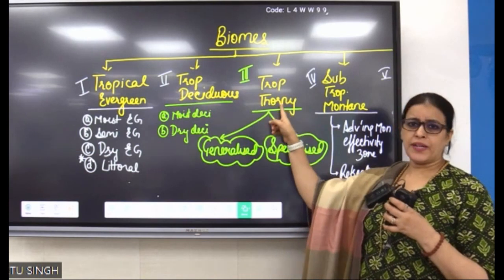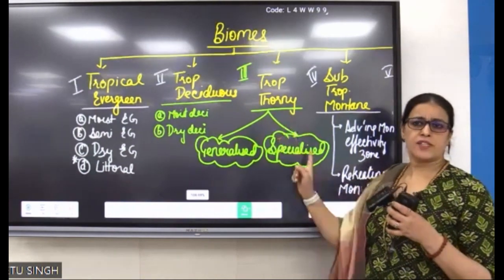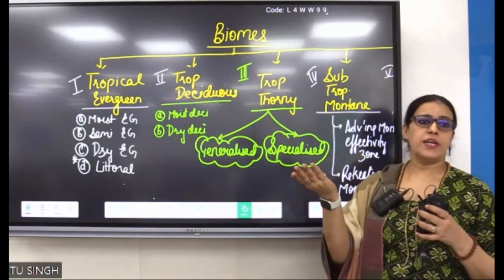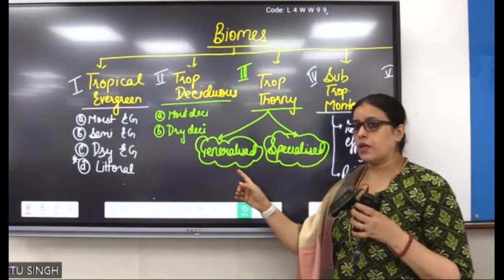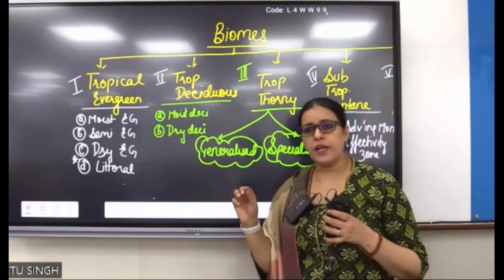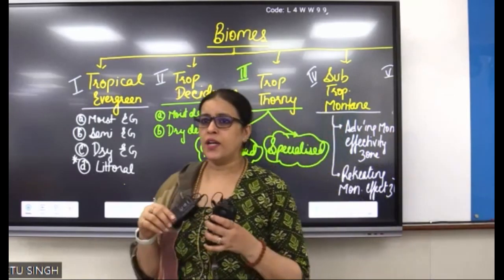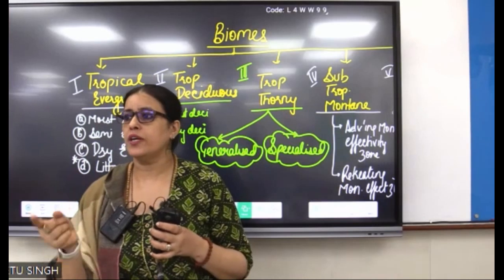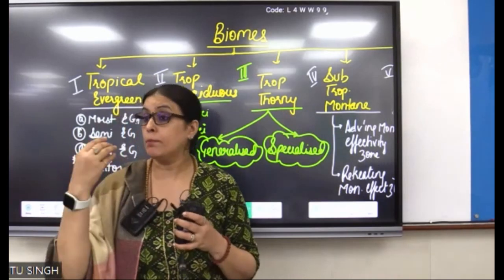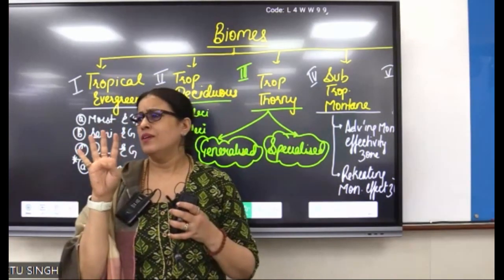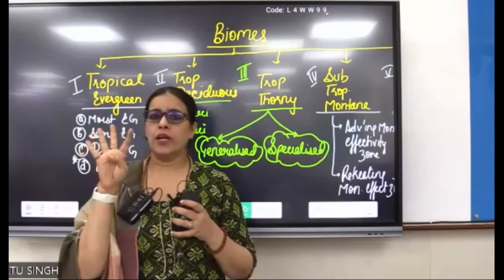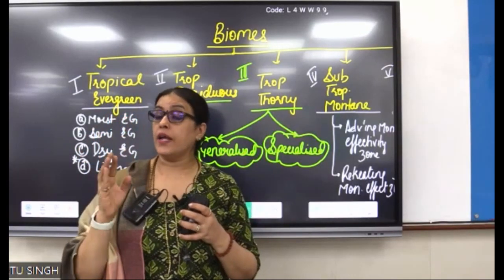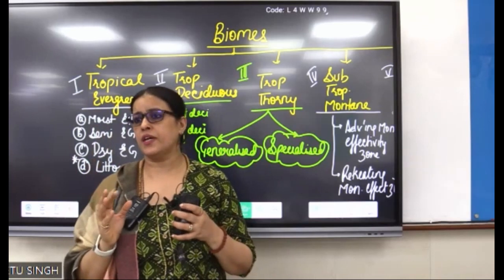When you are talking about Tropical Thorny as specialized, you should go to Marusthali or Rann. And when you are talking about it as generalized, you should go to the drought-prone tablelands of the country: Chhota Nagpur, Dandakaranya, Telangana, and rain shadow interiors of Sahyadri.